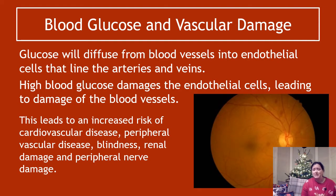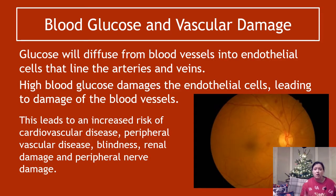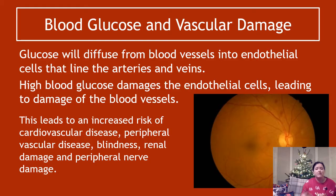High blood glucose is a problem — very high blood glucose causes vascular damage. Glucose diffuses from blood vessels into endothelial cells that line arteries and veins, and if blood glucose is really high it can damage those endothelial cells, leading to damage of whichever blood vessel it's in. If that's in the heart or vessels around the brain, that leads to cardiovascular disease. If that's in the arms, legs, or other organs, that's peripheral vascular disease. If that's the arteries in the eye, that leads to blindness.